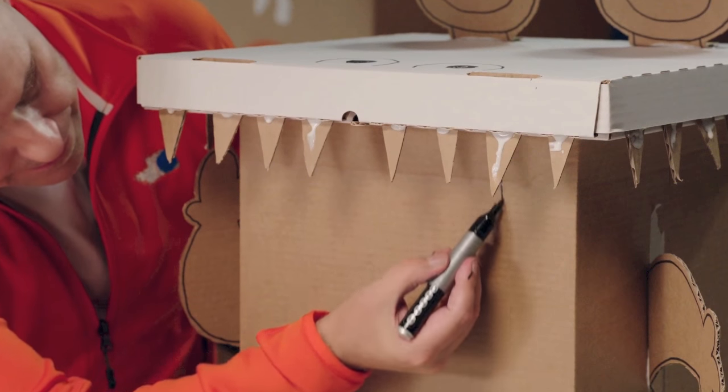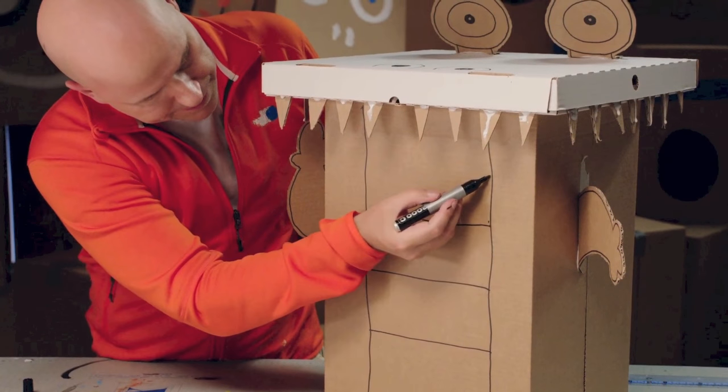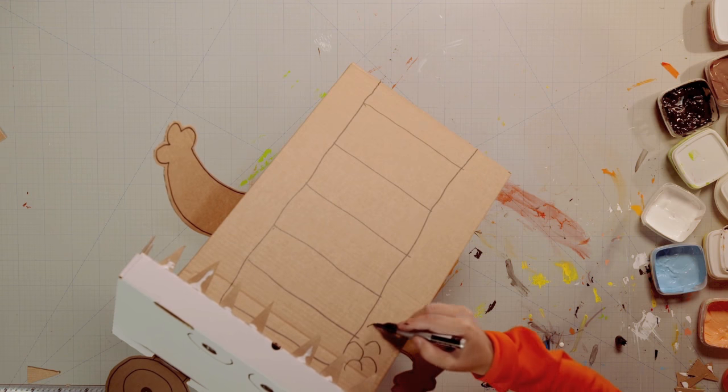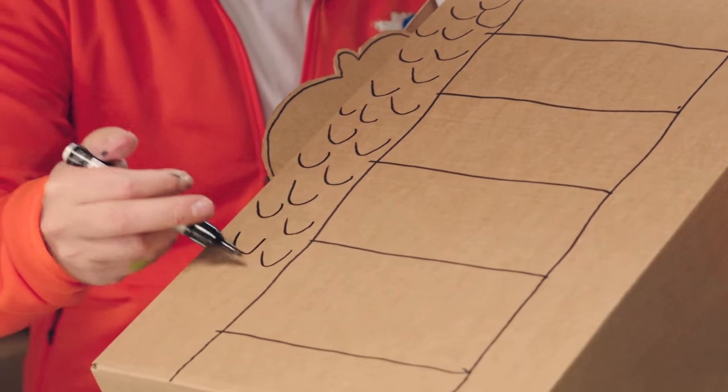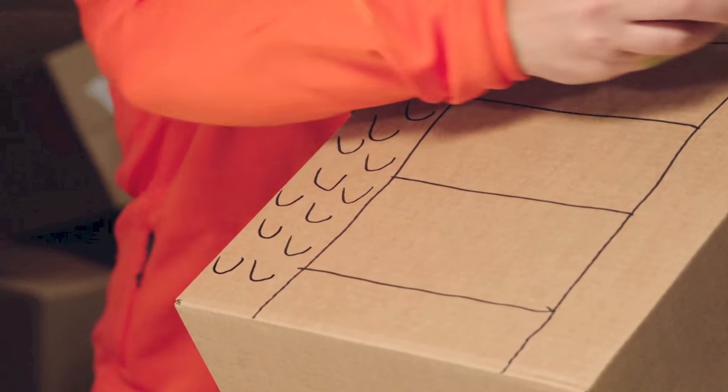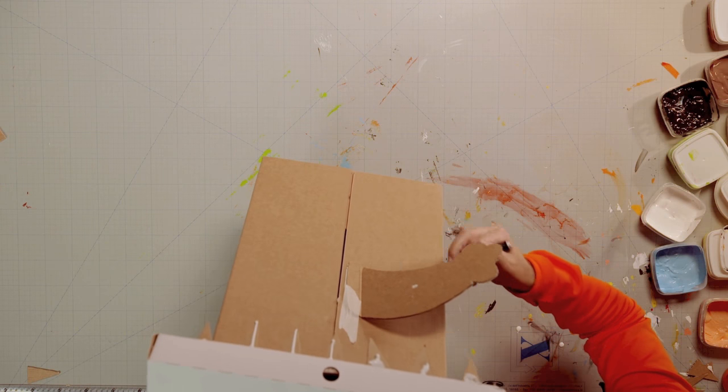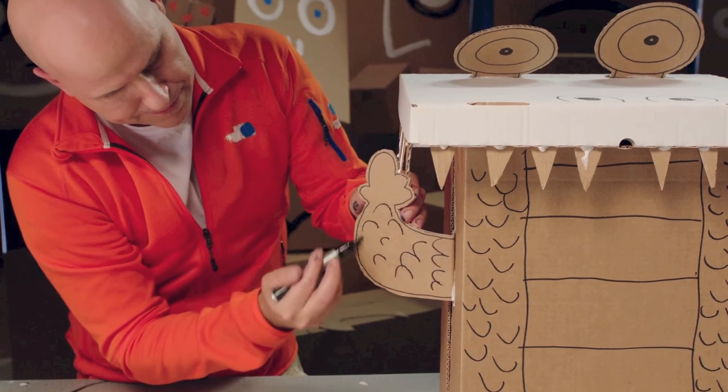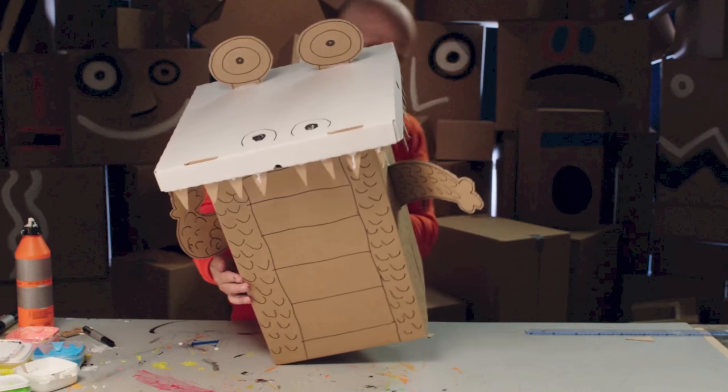Then continue with some stripes on the abdomen. Then start drawing scales. A dinosaur is a bit like a giant lizard, so we should make a lizard-like surface all over the body. Yes! Now I think it's starting to look good.